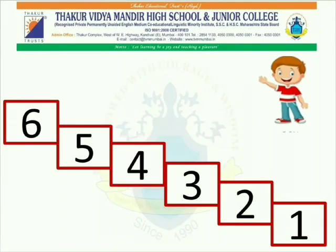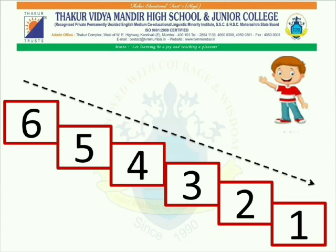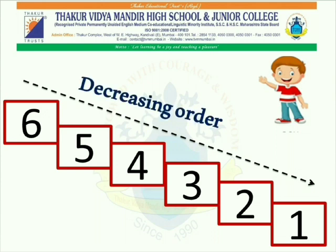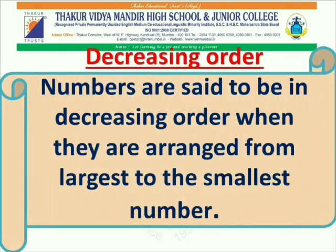Look, students, we have Sam back. Sam wants us to count these numbers again. Let us count: 6, 5, 4, 3, 2, 1. What did we just do? We counted the numbers from 6 to 1 in decreasing order. Now, let us see what is decreasing order. Numbers are said to be in decreasing order when they are arranged from the largest to the smallest number.